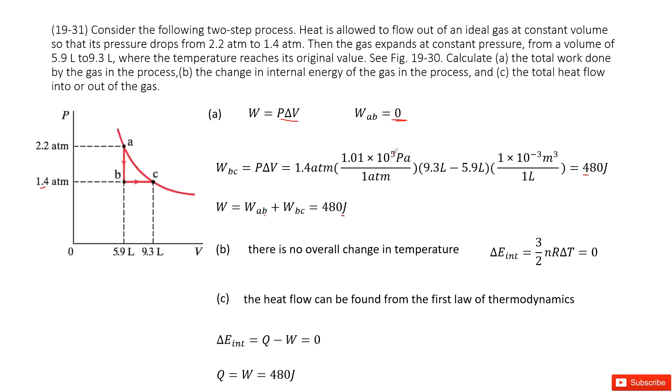Now part B tells you to find the change in internal energy of the gas in the process. We can find the internal energy change with this function: 3 over 2 nR delta T. Does any new gas come in or come out? No, the gas is not coming in or coming out, so it's fixed. So n is a constant.